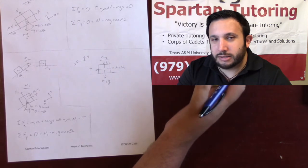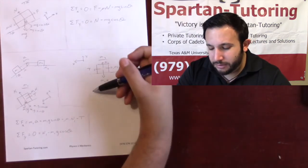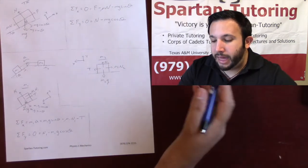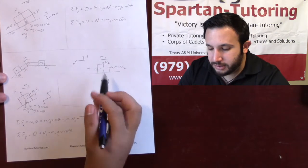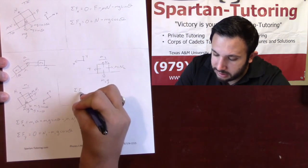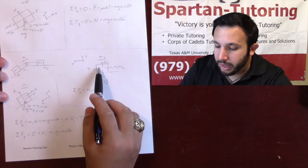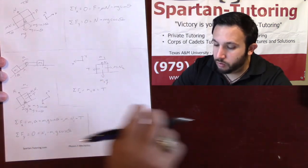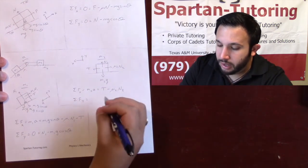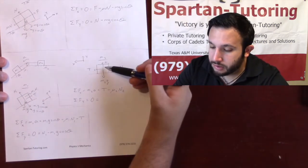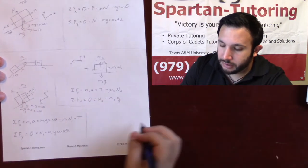It doesn't matter how you set up your axis as long as your mathematics and geometry stay consistent with it. I set it up to minimize the geometry I need to do. Sum of forces in x for m2: accelerating in x, so equals m2 times a. Tension T is positive x, minus mu2 N2 is negative. Sum of forces in y: not accelerating, so zero. N2 is positive y, minus m2g is negative y.